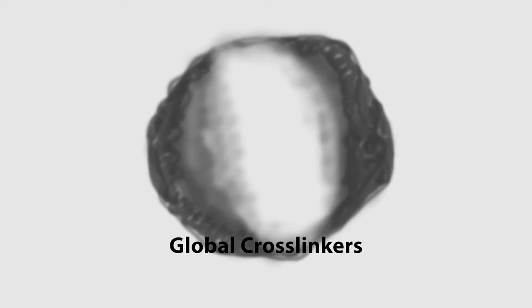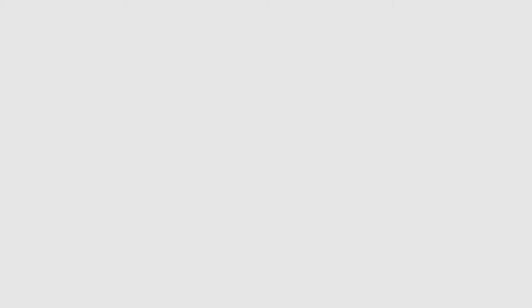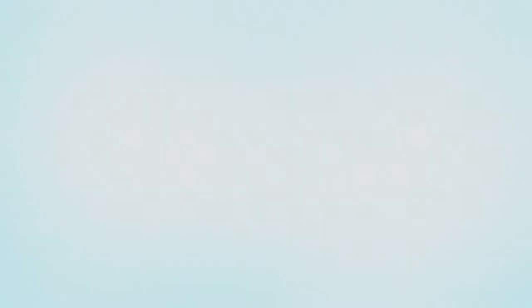We will focus on the equatorial region, where the cleavage furrow is formed when the cell divides. Here, a protein called Cortexilin joins and anchors the actin filaments. The third type of glue is special in that it translates chemical energy into mechanical work, helping the cell contract at the furrow. It's known as myosin-2.